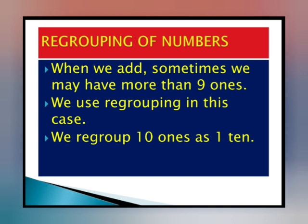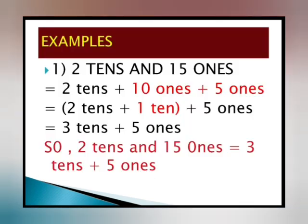Now we are going to see some examples of regrouping of numbers. Example 1: 2 tens and 15 ones. Yahan par 2 tens matlab 20 hota hai. Abhi hai 15 ones. 15 ones kaise bane honge? 15 kaise bana hoga? 10 plus 5 — jab humne 10 ones mein aur 5 ones add ki hongi. So 10 ones matlab kya hota hai? 1 ten.